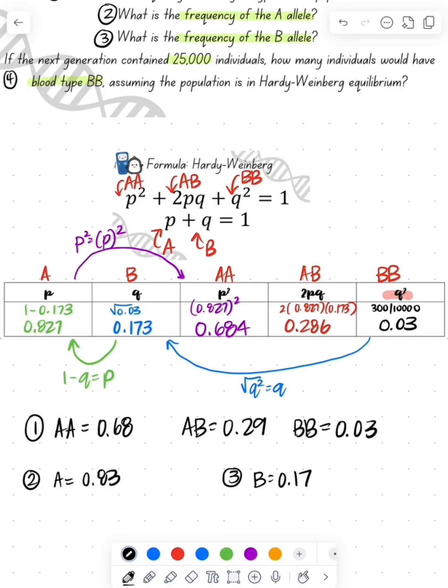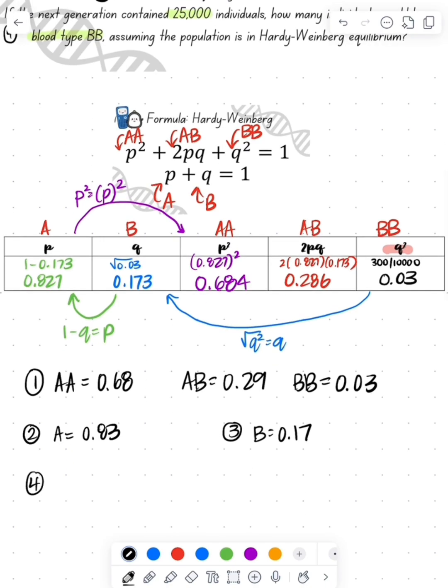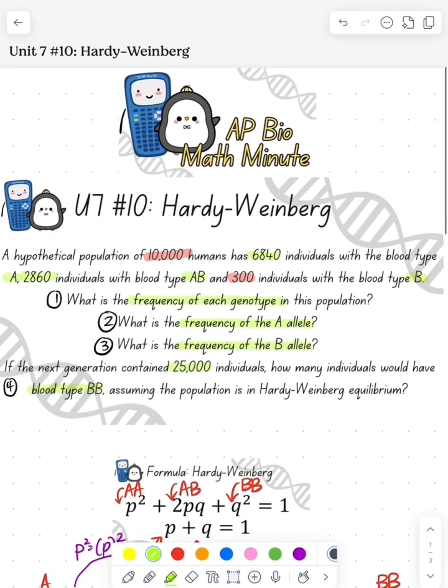The B allele is 0.17. And then if I had a population of 25,000, how many of them would have the BB blood type? I know that BB is 0.03 and there's 25,000 individuals. So 0.03 times 25,000 is 750.